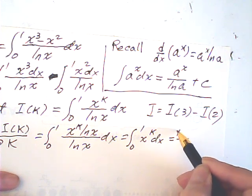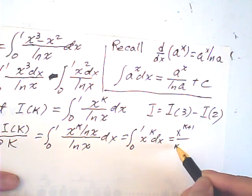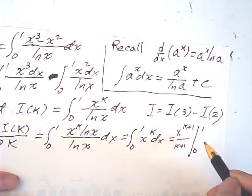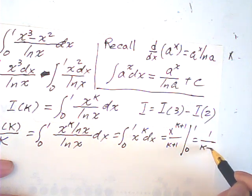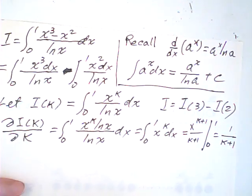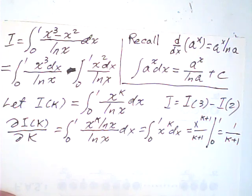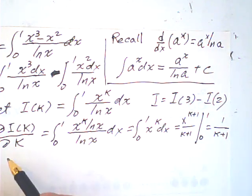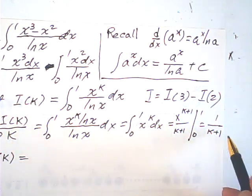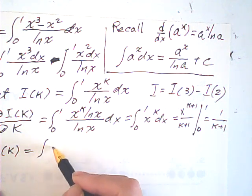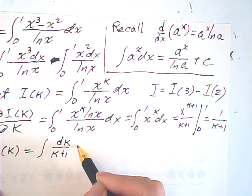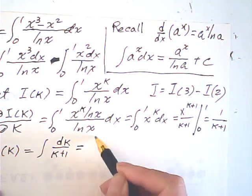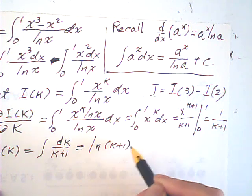That integral can be done easily. The integral from 0 to 1 of x^k dx equals x^(k+1)/(k+1) evaluated from 0 to 1, which gives 1/(k+1). From that, we can find i(k) by integrating: integrate 1/(k+1) with respect to k.